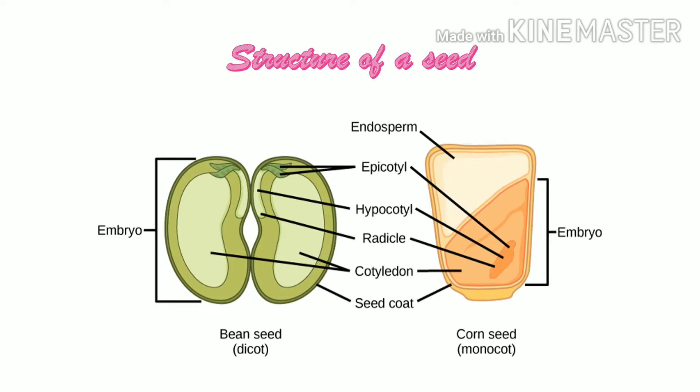Structure of a seed. First let us discuss about the structure of a seed. Here in this picture we can observe both kinds of seeds — the dicot and monocot. We already studied about it in the last class. Dicot seeds have two cotyledons inside them. They are thick and fleshy and can store food. Examples are pea and bean.